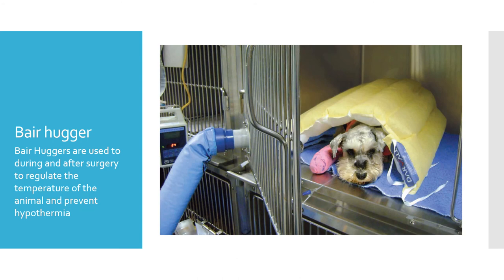Bair Hugger. Bair Huggers are used during surgery and after to regulate the body temperature of an animal and prevent hypothermia. This equipment will be used mainly during and after surgical operations. During and after surgery, a Bair Hugger should be changed in order not to cross-contaminate any bacteria from the surgery, as in human cases it was shown that Bair Huggers infected more than 300 people, causing them to have to return to the hospital.